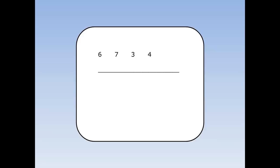To find the mean of these four numbers, first of all, we add up all the numbers. They add up to 20. And then we divide by 4, because there are four numbers. 20 divided by 4 is 5. 5 is the mean.